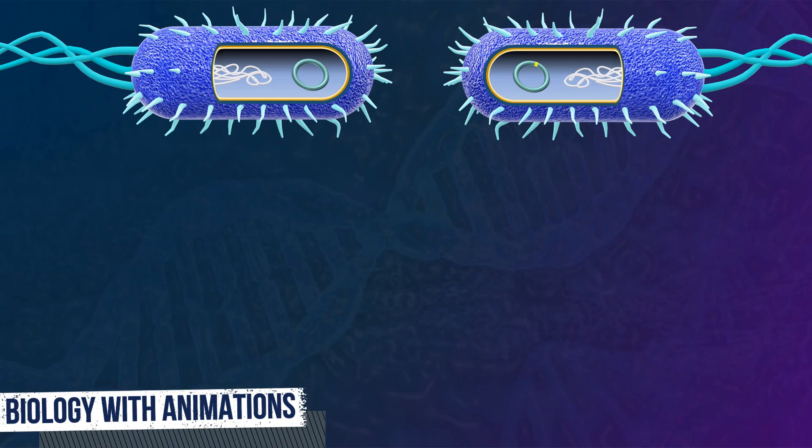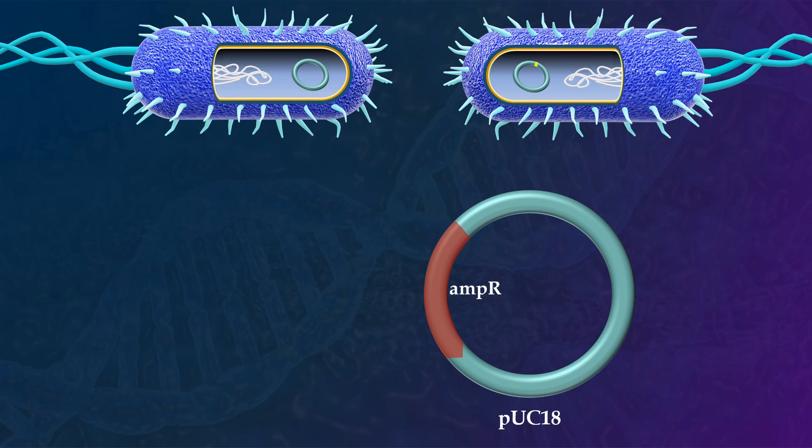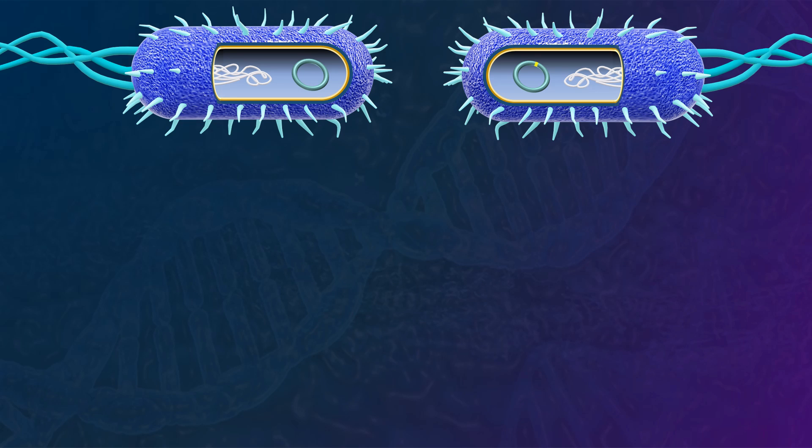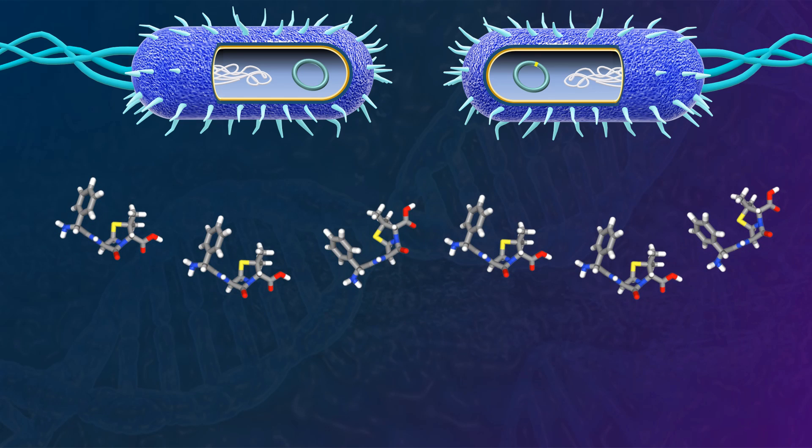Consequently, only transformed bacterial cells can survive because their plasmid carries the ampicillin resistance gene, which often codes for an enzyme called beta-lactamase. This enzyme is capable of breaking down beta-lactam antibiotics, including ampicillin.